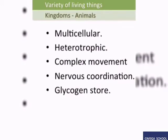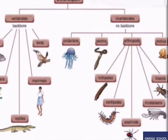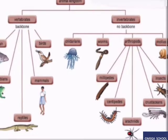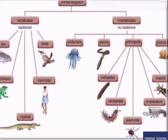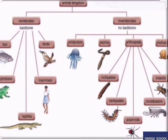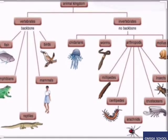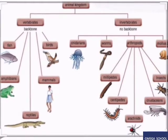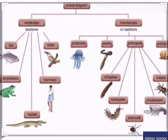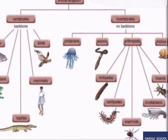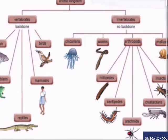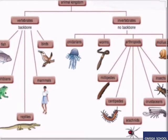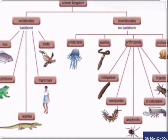We can divide the animal kingdom into two groups: vertebrates and invertebrates, as you can see in the form of a tree structure. Vertebrates are animals with a backbone, and invertebrates are animals without a backbone.